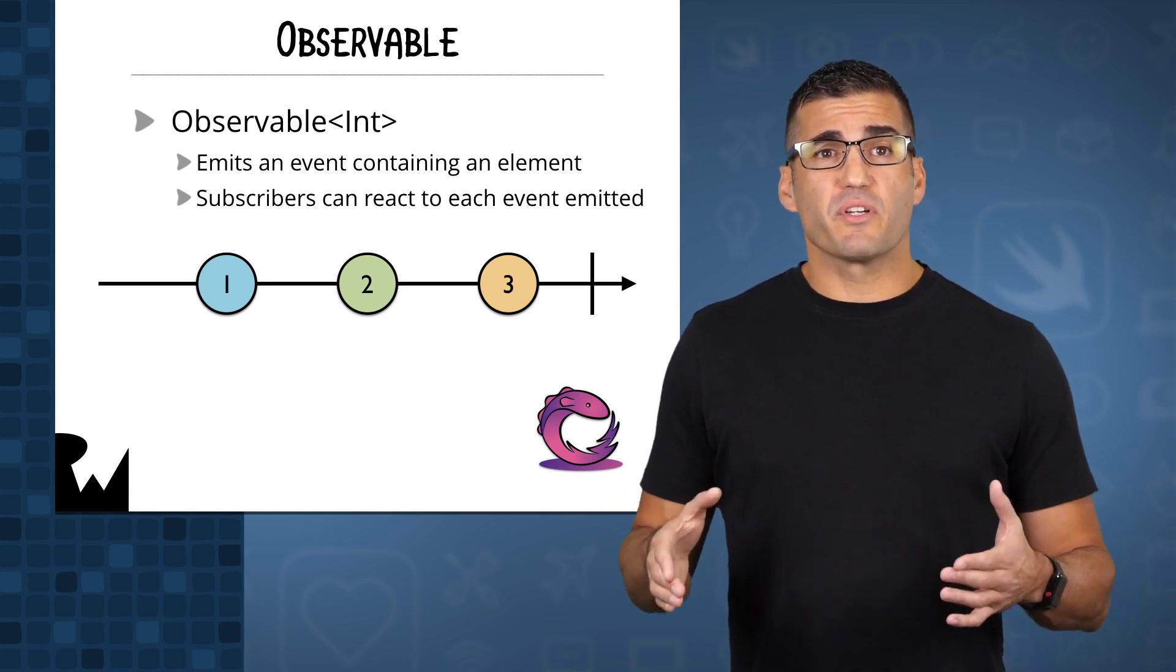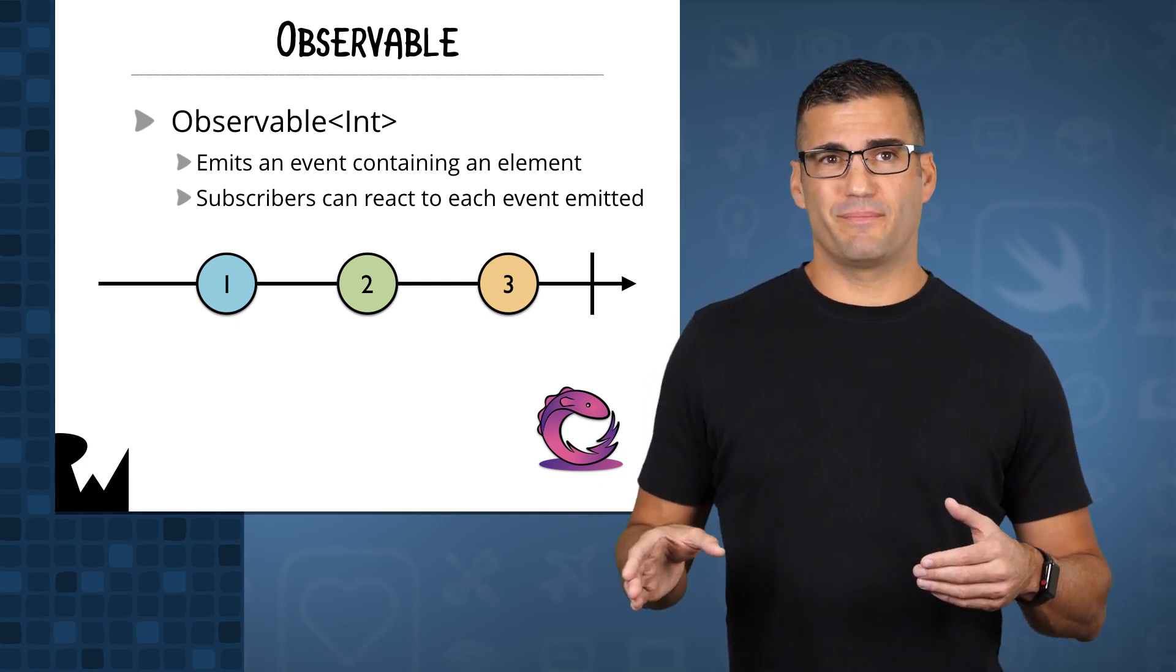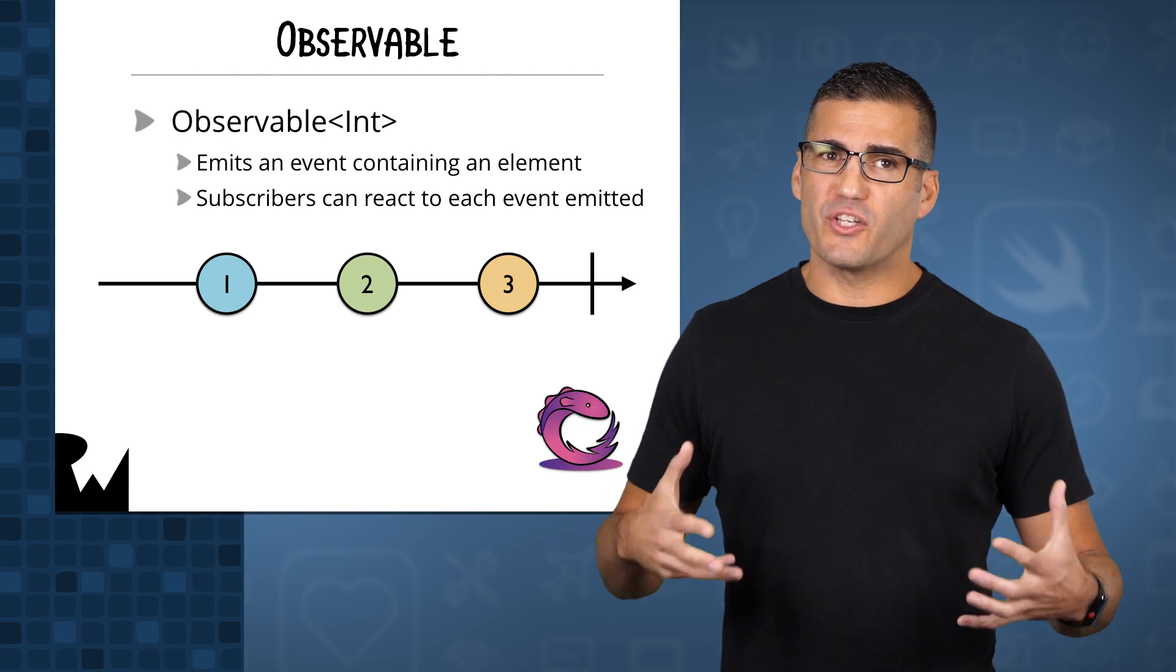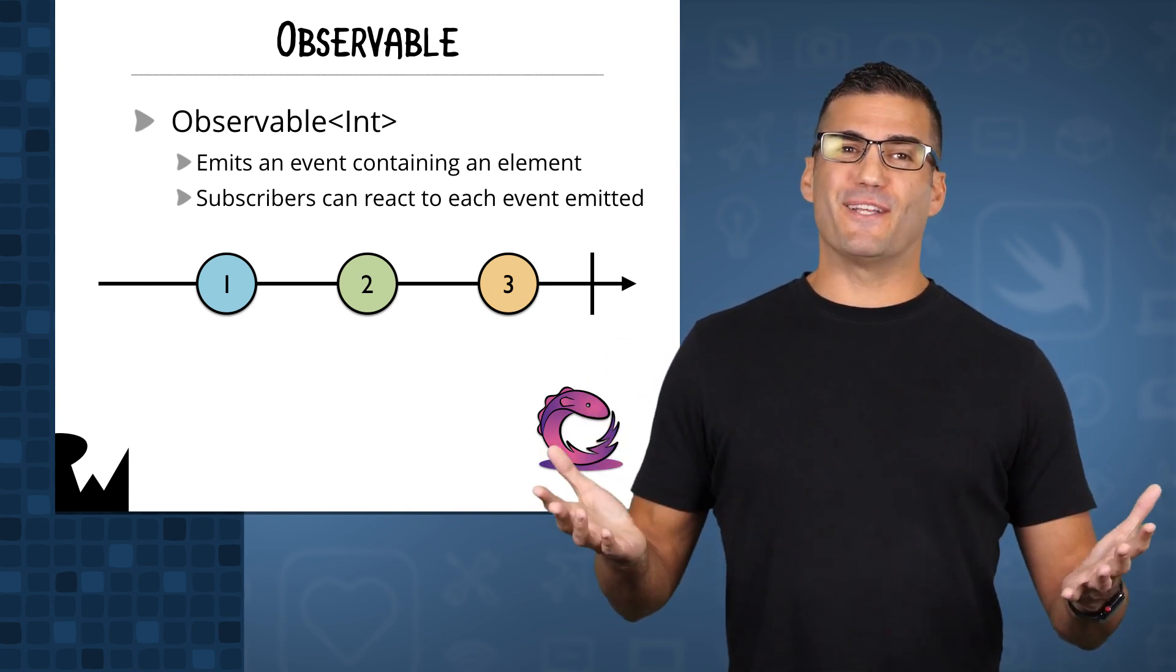Just remember that an observable is typed, so you wouldn't have an observable that emits integers and taps, for example. Well, I guess you could technically shoehorn something like that using protocols, but I can't think of a single reason for that craziness.